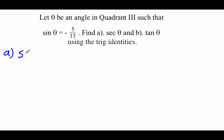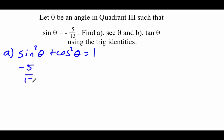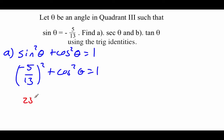I'm going to use that same Pythagorean identity: sine squared plus cosine squared equals 1. We know that our sine value is negative 5 over 13, so we'll have to square that, and then add on cosine squared of theta, and that equals 1. Squaring this fraction, negative 5 squared is 25, and 13 squared is 169. So we have 25 over 169 plus cosine squared of theta equals 1.